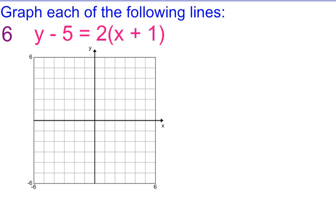Number 6, you will see, is in, hopefully recognized, point-slope form. So they have given us point-slope form. Some of you like to graph from slope-intercept. So if you want to change this to slope-intercept form and graph it, you may.